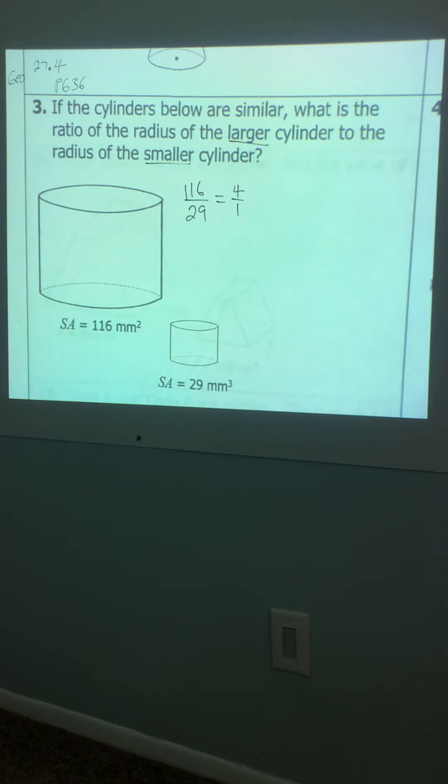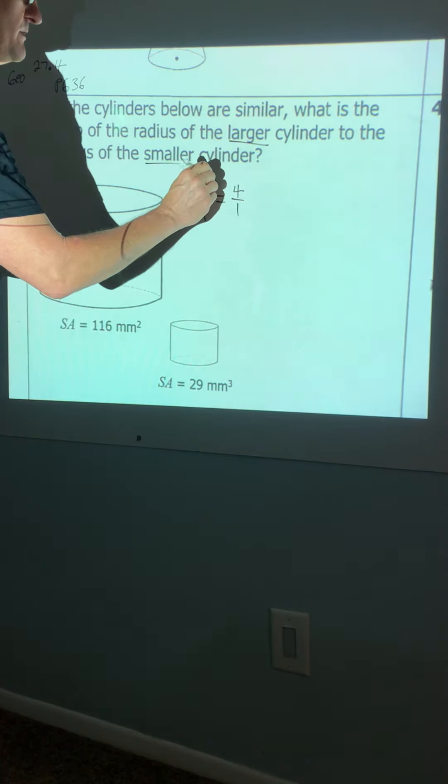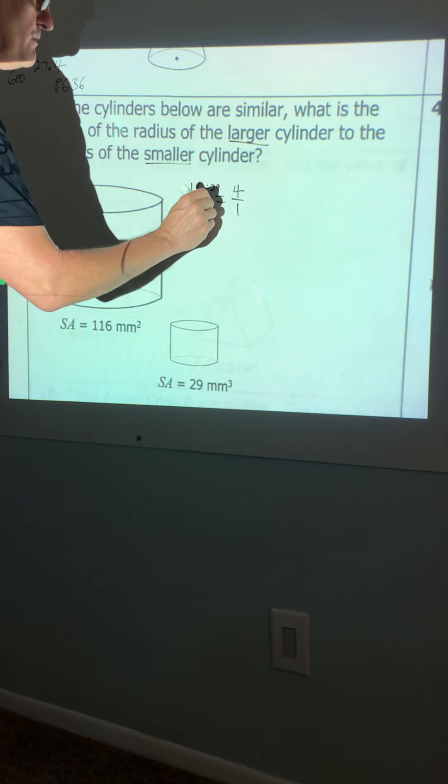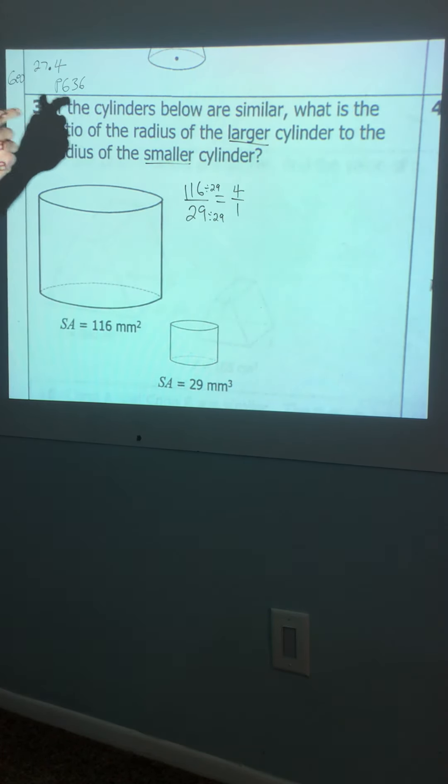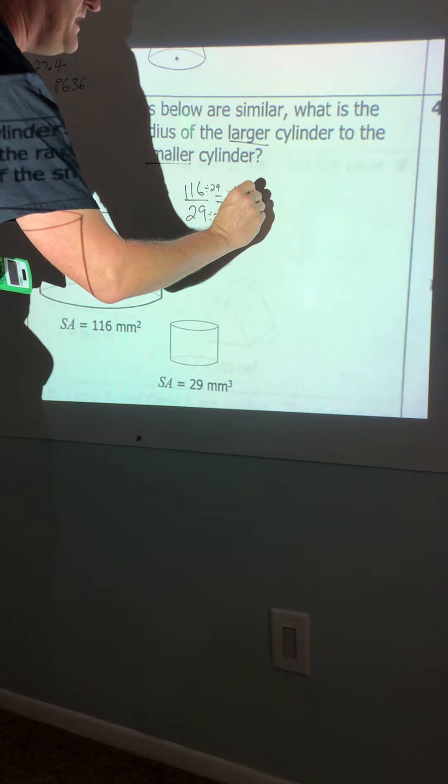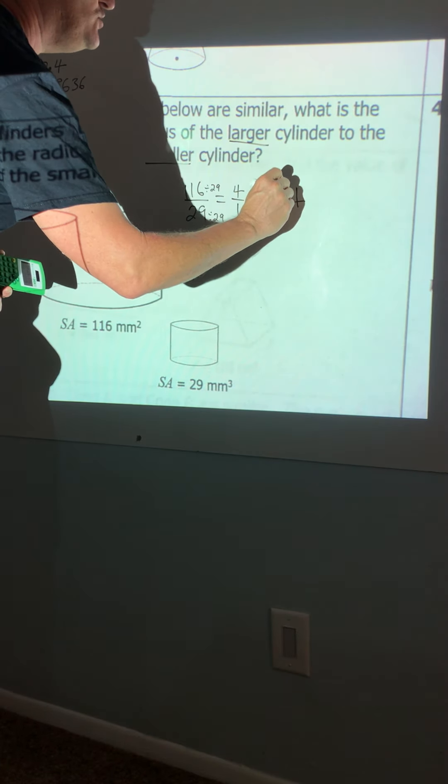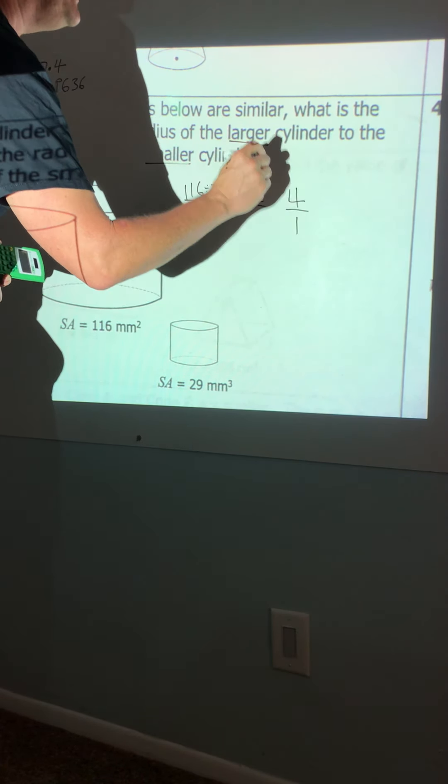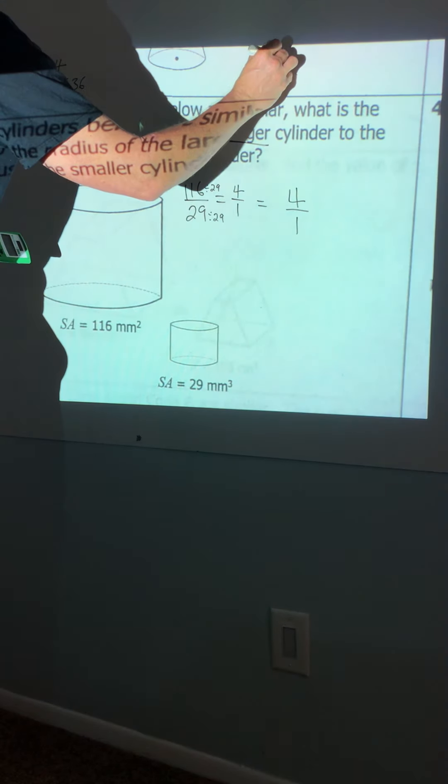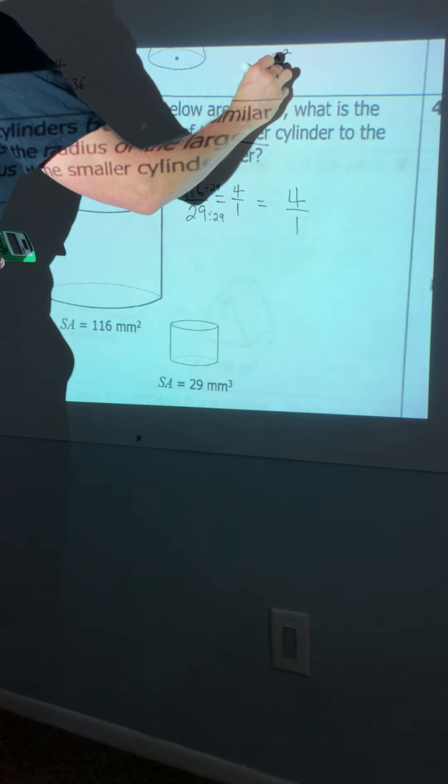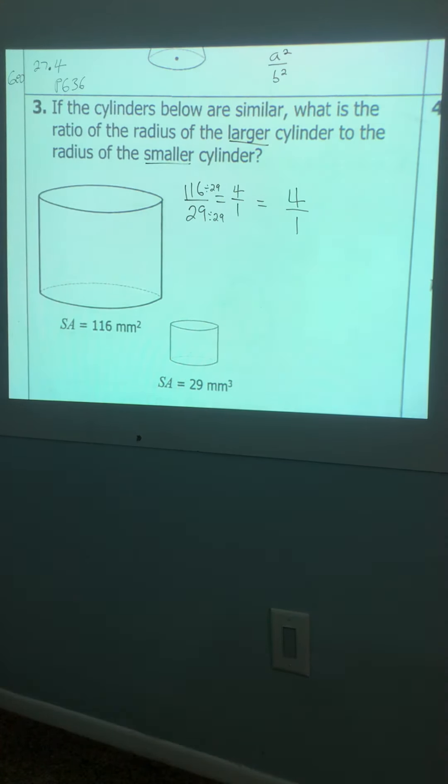29 times four is 116. So you can divide, if you divide them both by 29s, my brain didn't see it at first. So your ratio of your surface areas is four to one. Now, I need you to do me a favor. If this is the ratio of the surface areas, then that's a squared to b squared. It's not parts, it's the area.